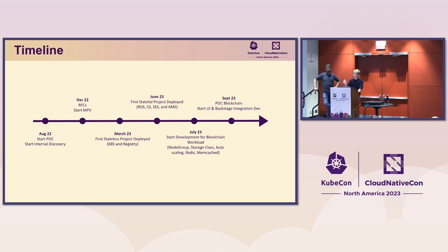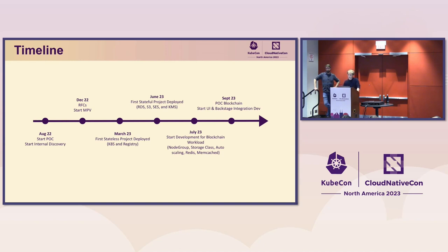After this, we started development of additional resources for blockchain workloads. Blockchain workloads are more complicated — you need to customize the node group, have access to storage classes, auto-scaling, and caching with Redis or Memcached. Then in September, we had a POC of running blockchain nodes on the platform, and we also started development of a UI and a Backstage integration, because there are interesting synergies between Backstage and Crossplane.